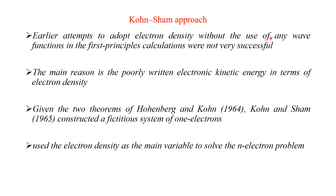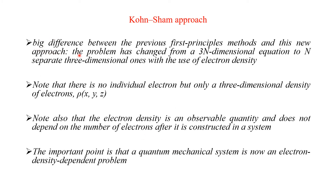The main reason is the poorly written electronic kinetic energy in terms of electron density. Given the two theorems of Hohenberg-Kohn, developed during 1964, Kohn-Sham in 1965 constructed a fictitious system of one electron which uses the electron density as the main variable to solve the N-electron problem. The big difference between the previous first-principles method and this new approach is the problem has changed from the 3N-dimensional equation to N separate three-dimensional ones with the use of electron density.